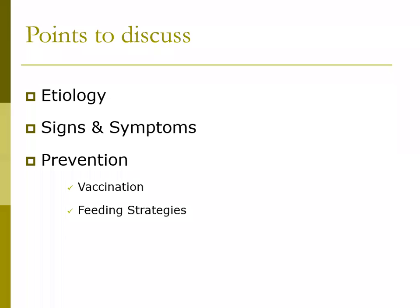Regarding the second strategy — feeding strategies — smart feeding practices will enable you to limit the potential for this disease to affect your herd or flock. The causative bacteria proliferate in the intestine in response to ingestion of abnormally high levels of starch, sugar, or protein. You need to be careful how you feed certain feedstuffs that contain high levels of these nutrients.